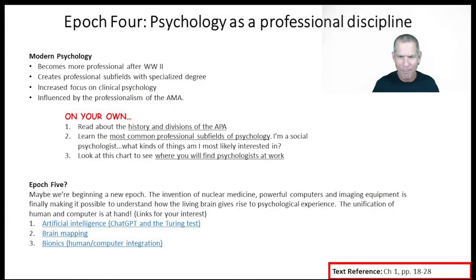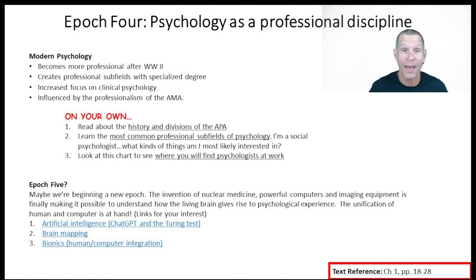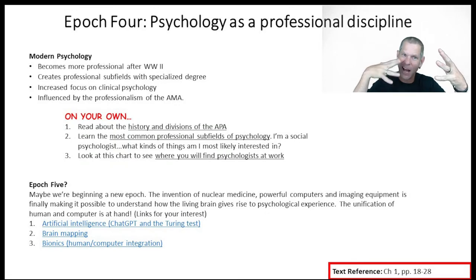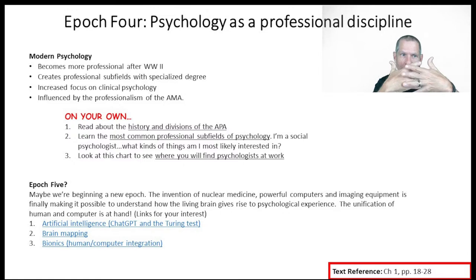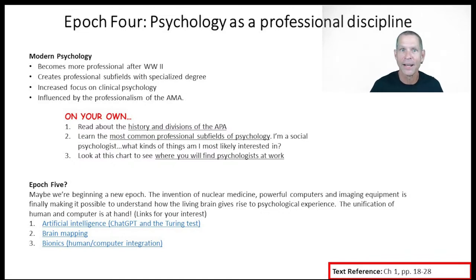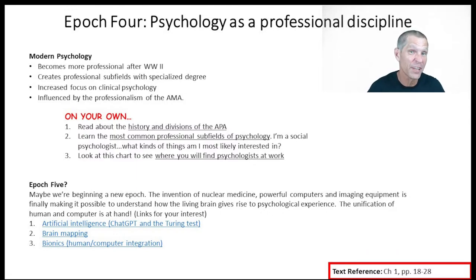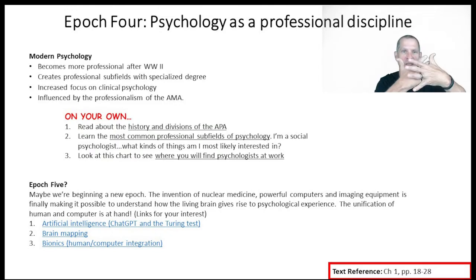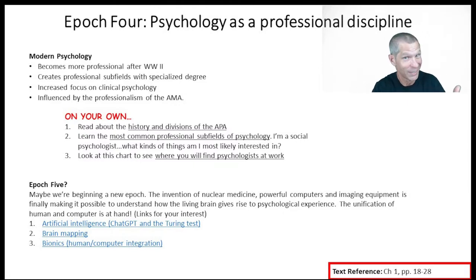Right before I let you go, I want you to know that in the last 10 or so years we're actually moving into what I would call the fifth epoch of psychology — the melding of computers and humans. We've gotten so good with human psychology and computers that they're starting to work together. We're now doing things like creating artificial intelligence — computers that can act like humans — and bionics, where human beings can now control prosthetic limbs. I would say in the next 20 or 30 years, during your lifetime, we are going to move into epoch five, where computers and humans come together and we become the cyborg generation.